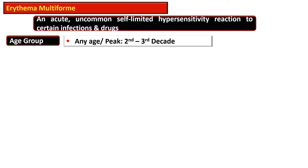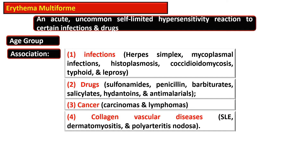This can occur at any age but the peak age of occurrence is during the second and third decade of life. It is associated with infections, drugs, cancers, and collagen vascular diseases.